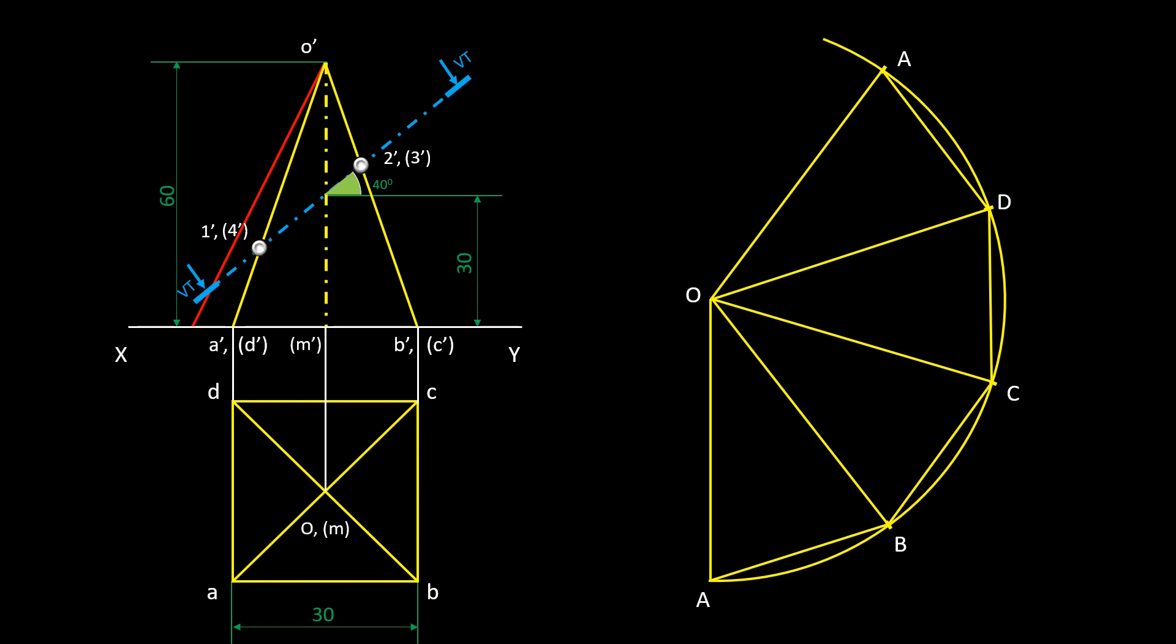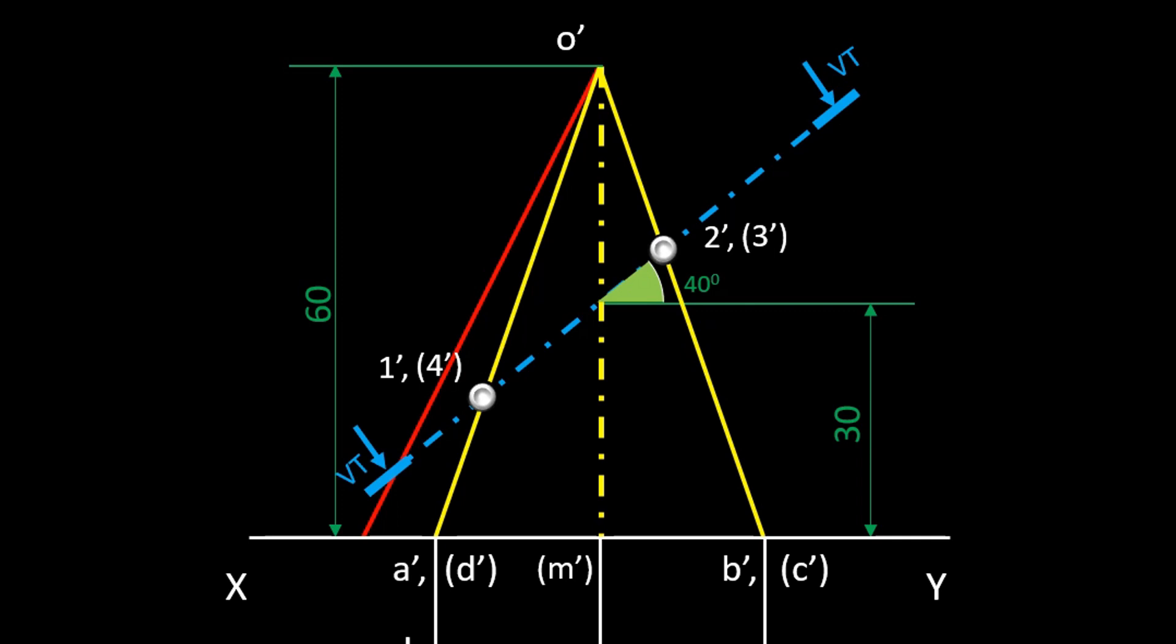Now let's mark the section points on the developed pattern. We can see the section points on the slant edges in front view, and we have to reproduce the points on the pattern. Here the slant edges in the pattern is true length, but in front view it is a reduced one. So it is not possible to directly measure the length from front view and mark it on the pattern.